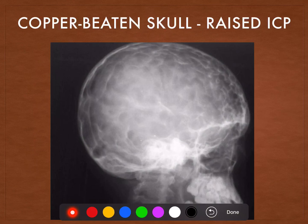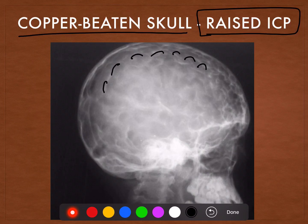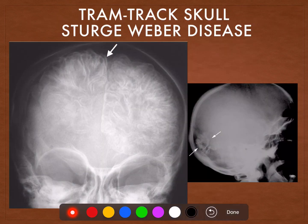Again, in this skull of a young patient, we see these multiple gyral impressions. These lucencies that you see are actually the gyral impressions of the cerebral hemispheres and this is known as the copper beaten skull, which is characteristic of raised intracranial pressure in a child. Gyral impressions leading to copper beaten skull.